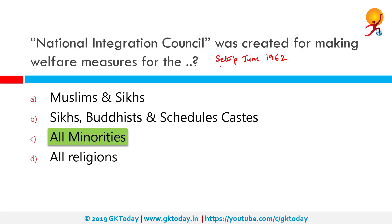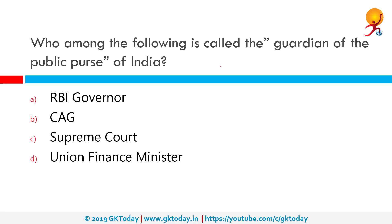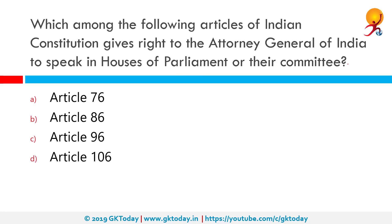Who among the following is called the guardian of public purse? That would be the Comptroller and Auditor General of India. The Comptroller and Auditor General is the person in charge of all receipts and expenditures by the Government of India and any body substantially financed by the government. So the correct answer is CAG.